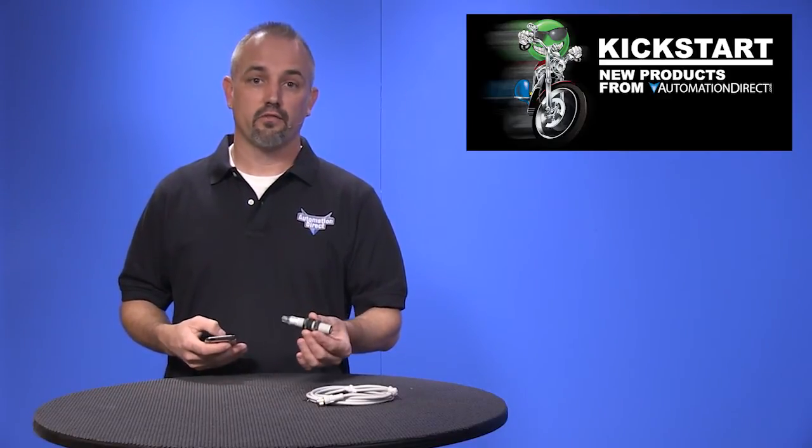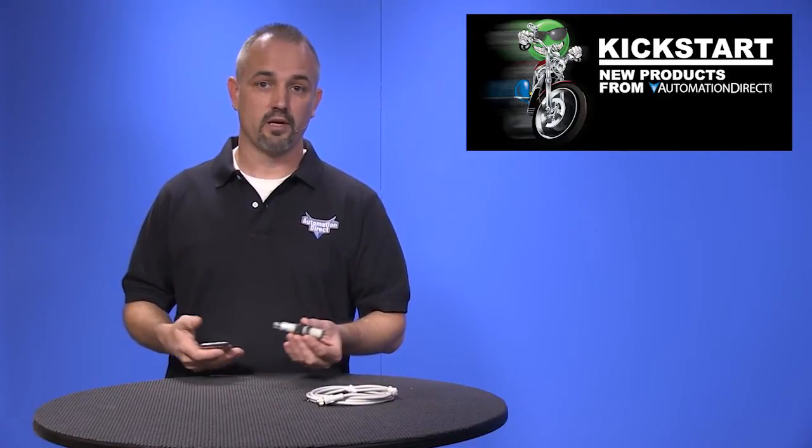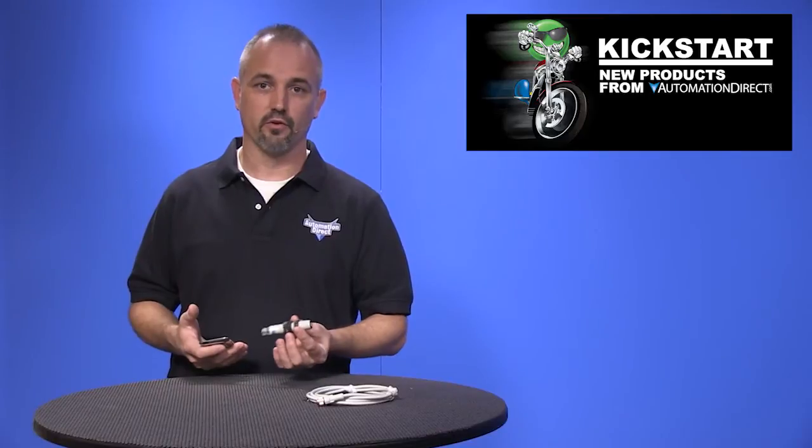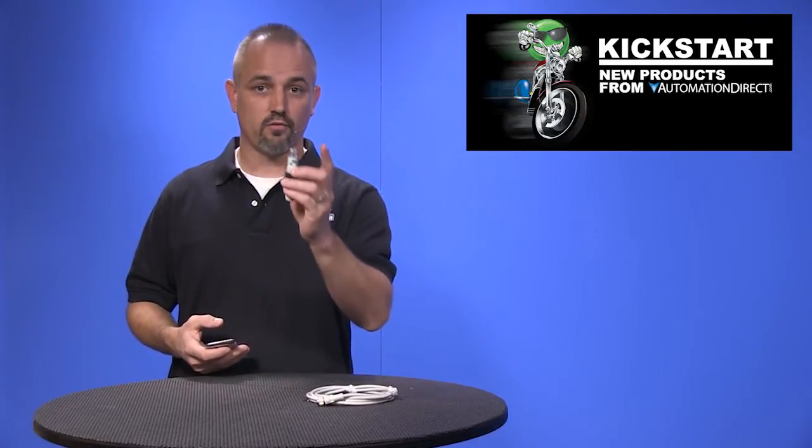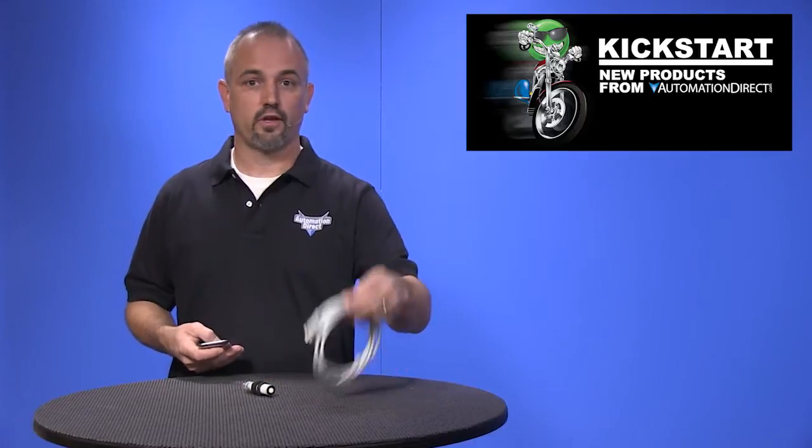There are six different output types: single PNP, dual PNP, PNP and 4-20mA, PNP and 0-10V DC, 4-20mA only, and 0-10V DC only. They all offer the M12 quick disconnect, so don't forget to pick up your cables when you order the sensors.